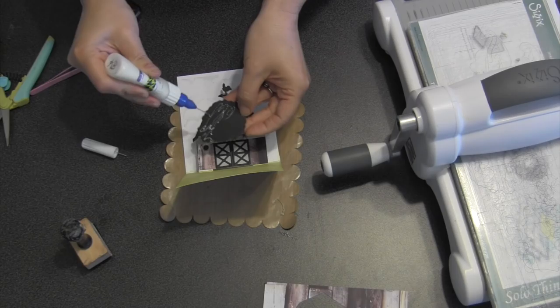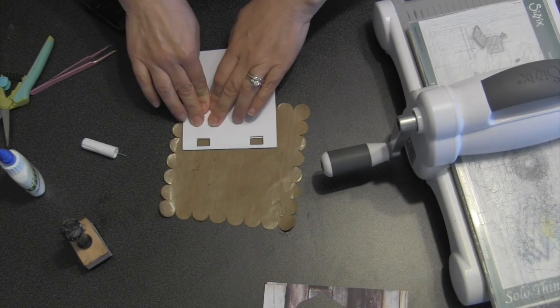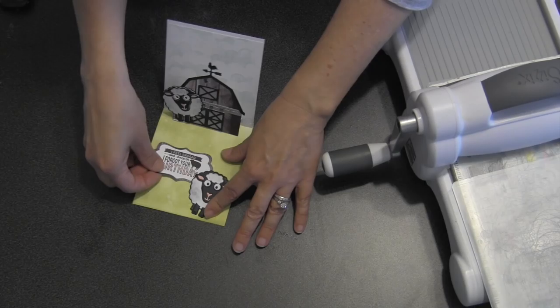Okay, where my little sheep is going to go is actually attached to the front of the barn. I'm just going to use glue on half of the sheep, the half that's going to actually be touching the barn. Since some of it's going to hang off the edge, I just made sure I didn't have adhesive in those areas.